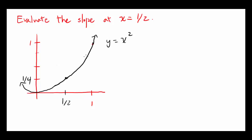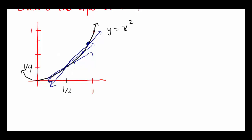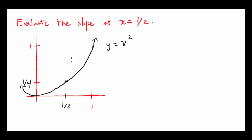We're going to evaluate the slope of a second line, and we're going to get closer and closer. We'll take the limit of the slope of the second line as the points are moving closer and closer to our point. And we're going to write this down mathematically and evaluate it in this video.